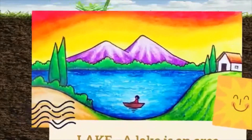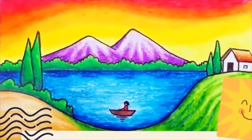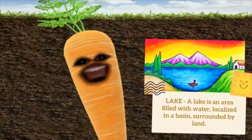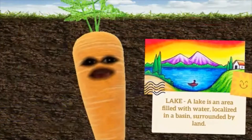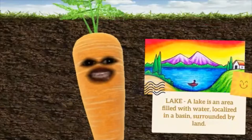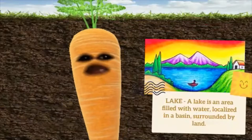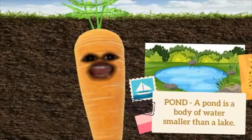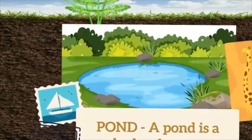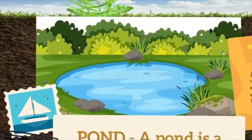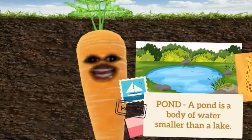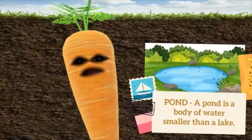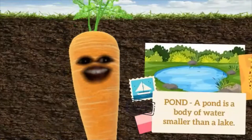Number 3 is a lake. A lake is an area filled with water localized in a basin surrounded by land. Number 4 is a pond. A pond is a body of water smaller than a lake.